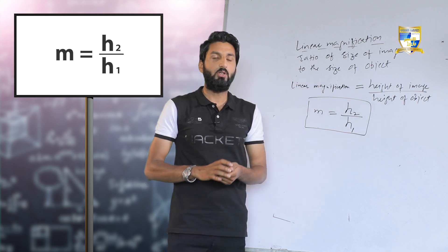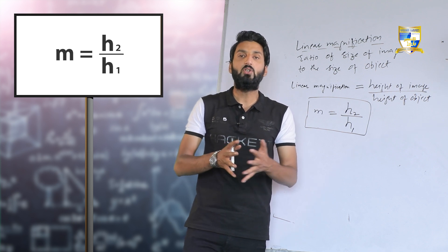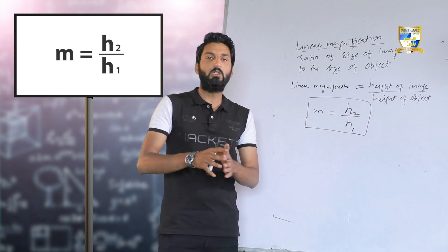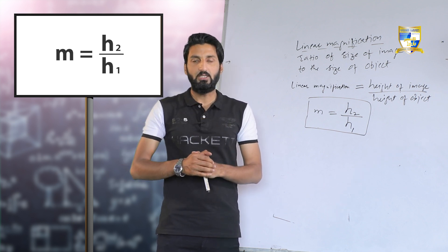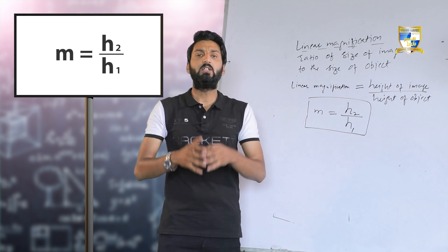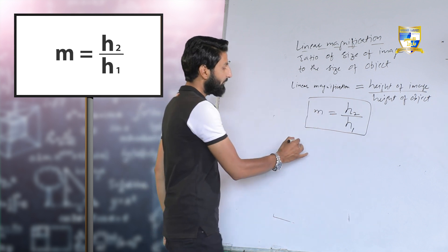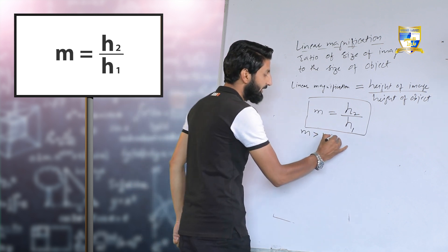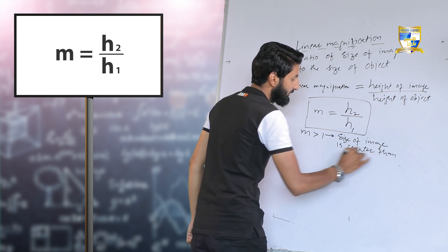Linear magnification tells us the size of the image relative to the object. If M is greater than 1, it means the size of the image is greater than the size of the object — because the numerator is greater than the denominator. For example, if M = 2.2, that value being greater than 1 tells us the image is larger than the object.